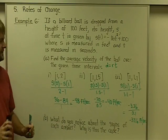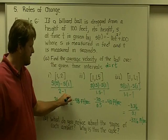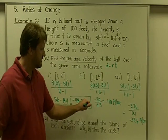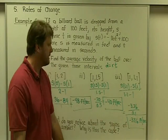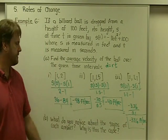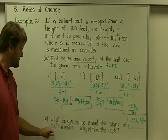what do you notice about the signs of each answer? Well, we've got negative 48 feet per second, negative 40 feet per second, and negative 33.6 feet per second. Of course, they're all negative. Okay, we'll say that.